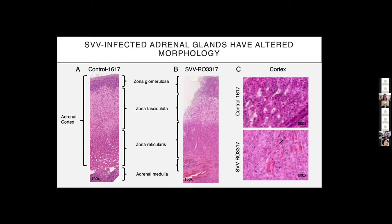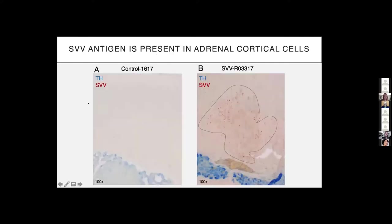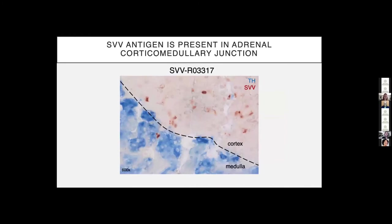The next question was where is SVV itself located in the adrenal gland — in the medulla or in the cortex? We used tyrosine hydroxylase, a medullary enzyme, to delineate the adrenal medulla from the adrenal cortex. We found that SVV antigen is present in the adrenal cortical cells of our infected rhesus macaque, outlined here in black. This was our predominant finding. However, there was one instance where we did see SVV antigen present at the adrenal cortical-medullary junction.